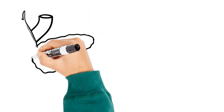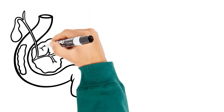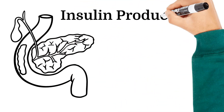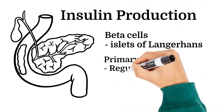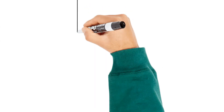It is synthesized by the beta cells of the islets of Langerhans in the pancreas, and its primary function is to regulate glucose concentration in the blood.